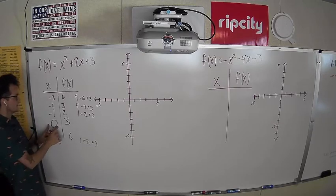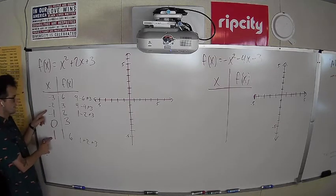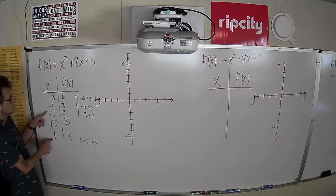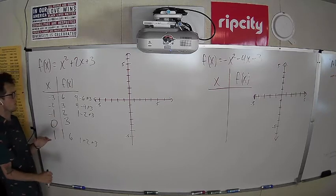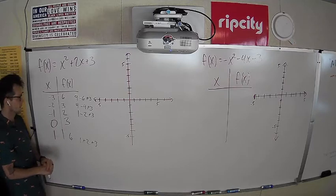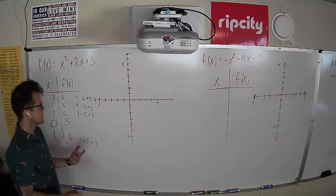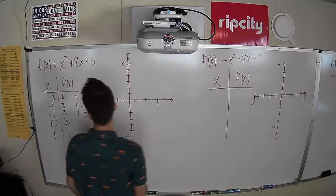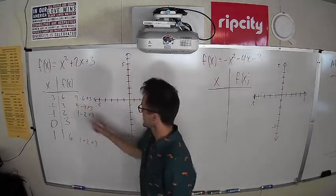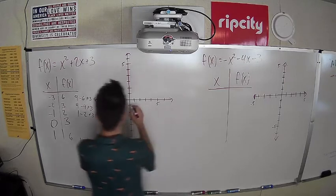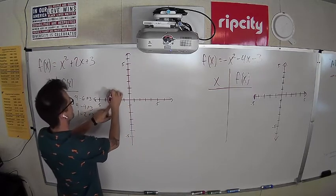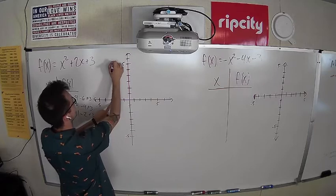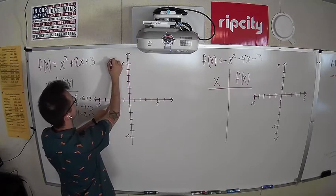So we started with a guessing game: we started with 0, we grew from there, and chose to go with the smaller y value — and it paid off. Let's plot our points. Negative 3, positive 6 — go left 3, up 6. Negative 2, positive 3. Negative 1, 2. Zero, 3. And 1 over to 6.